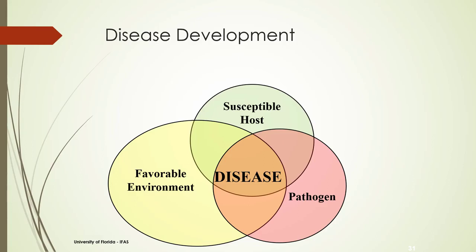In order for disease to happen, you need a favorable environment — in the case of root rot, you need water present. You also need a susceptible host, which could be a plant susceptible to certain diseases, or a plant under stress making it more susceptible. And then you need the pathogen.